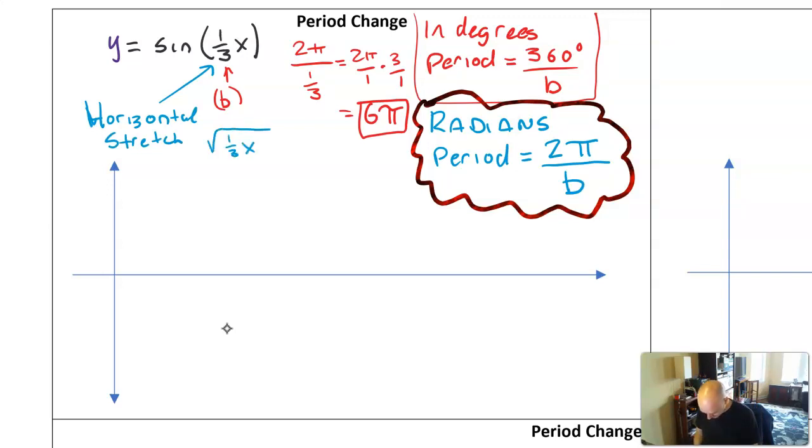And another way to think about this, other than as a period change, is that this is a horizontal stretch of your graph. Remember when we graphed things like the square root of one-third x? That took the square root graph and stretched it out, made it longer.